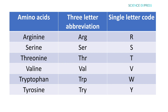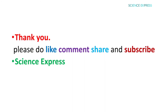The remaining single-letter codes are: arginine represented by R, serine by S, threonine by T, valine by V, tryptophan by W, and tyrosine by Y. Thanks for watching — please do like, comment, share, and subscribe to Science Express.